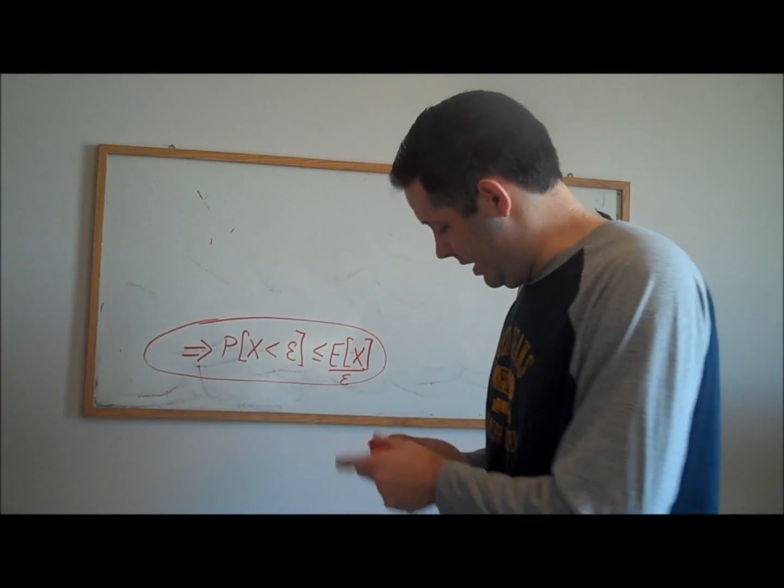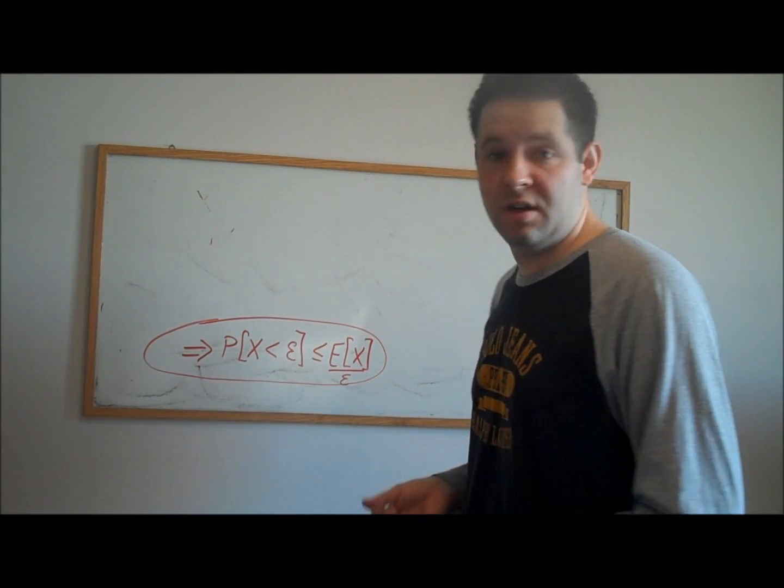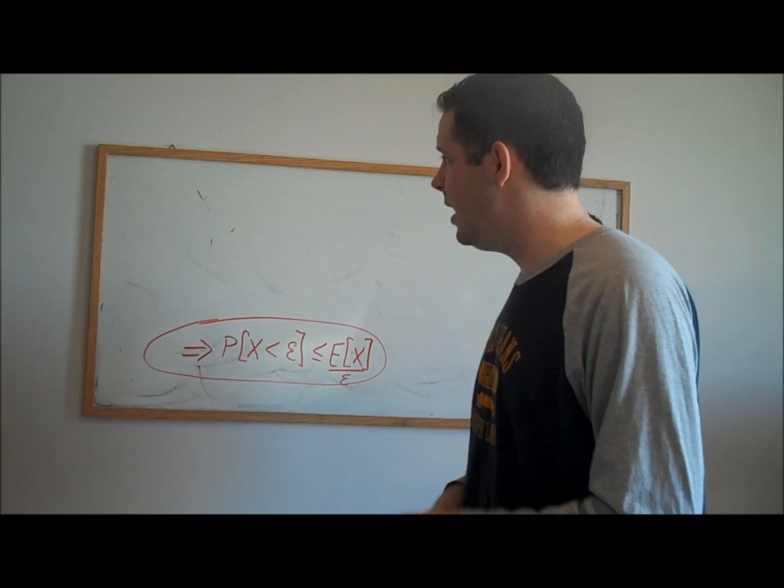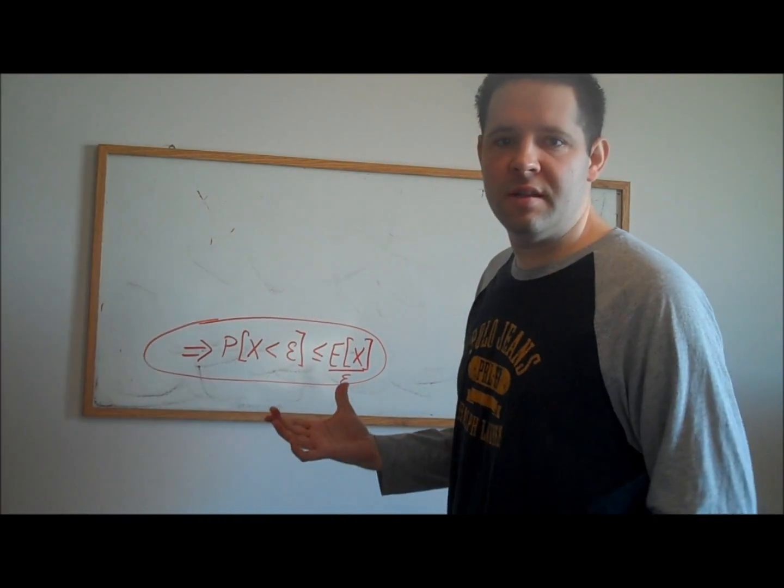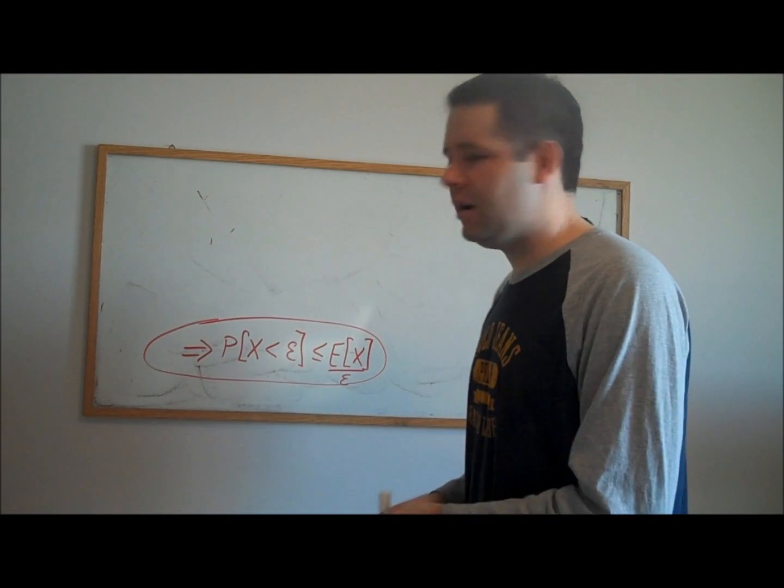Let's do an example, and this is actually one of the more important results in mathematical statistics, it's called the weak law of large numbers. We're going to put together the two ideas that we've talked about so far in this video, and we're going to prove the weak law of large numbers.